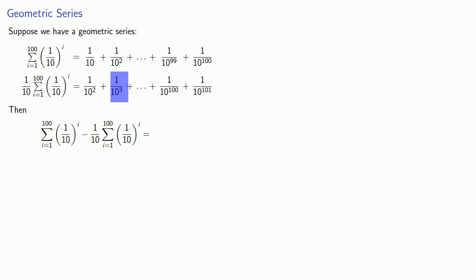Which is the term after this 1 over 10 to the second, and so on, until this 1 over 10 to the 100th in the subtracted series cancels out this 1 over 10 to the 100th in the original series. And that means that when we find the difference,